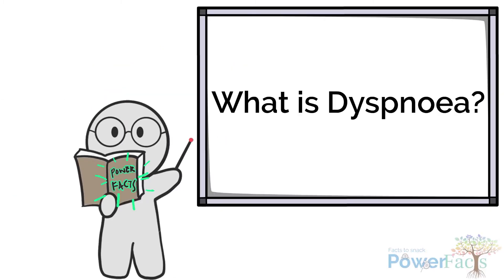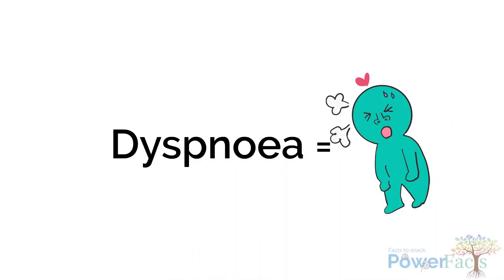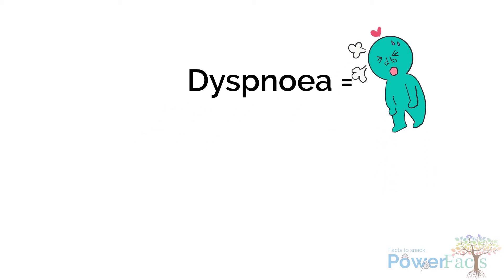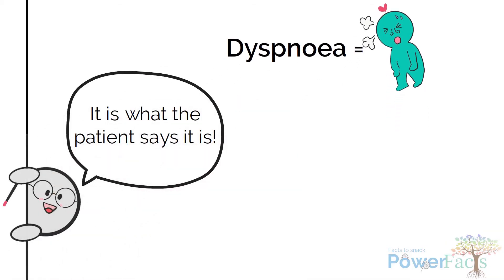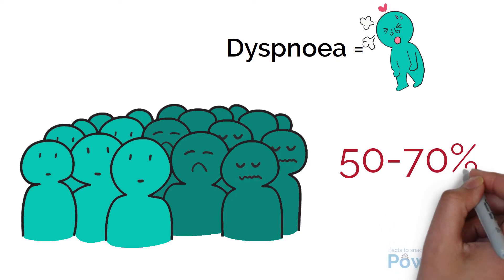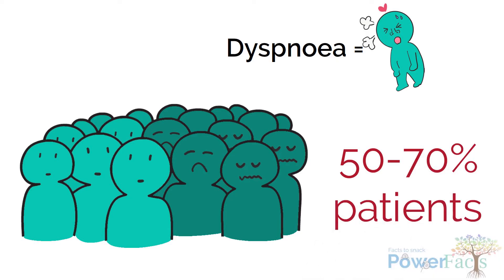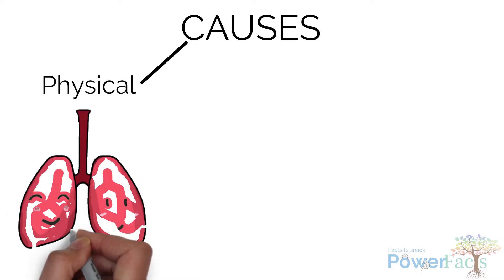What is dyspnea? Dyspnea, also known as breathlessness, is a subjective sensation of an uncomfortable awareness of breathing. It is a frequent symptom occurring in 50 to 70 percent of dying patients. What can cause dyspnea? Dyspnea can result from physical illnesses, for example pneumonia.